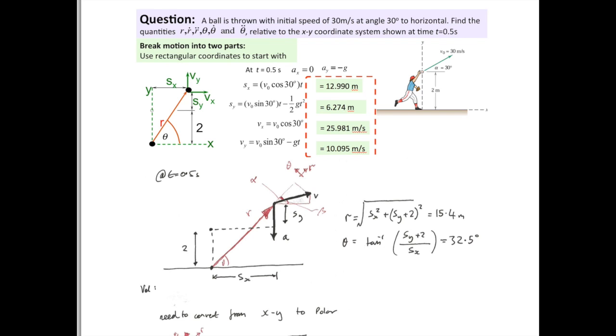Okay, so this is another example of where you're combining two coordinate systems to solve the question. Whereas last time we combined normal tangential and polar coordinates, in this question we're combining rectangular coordinates for projectile motion and polar coordinates.